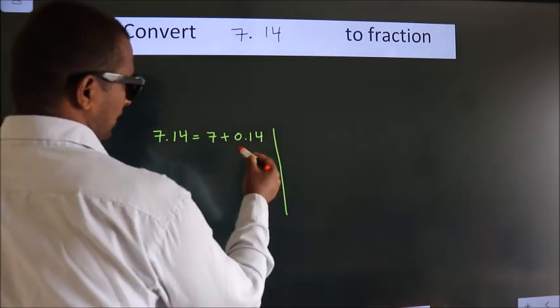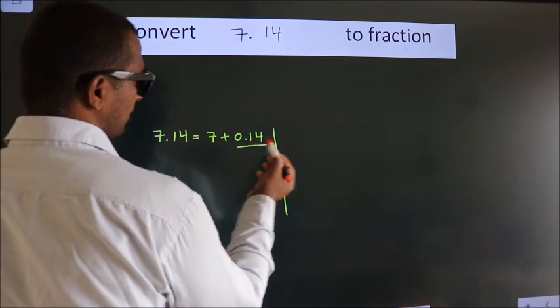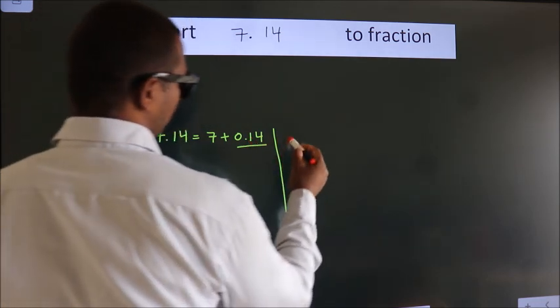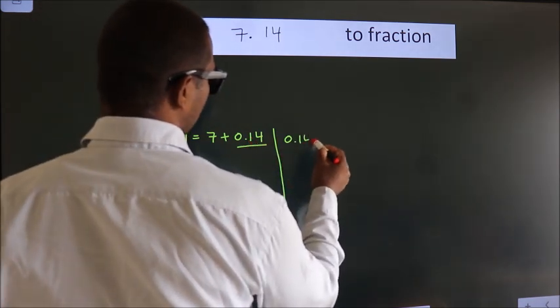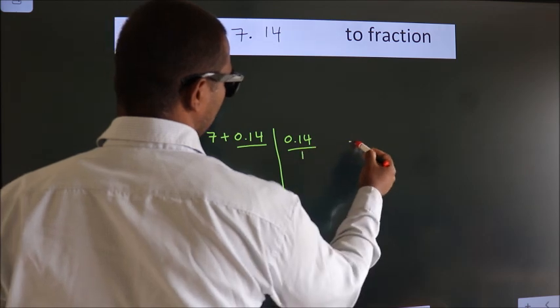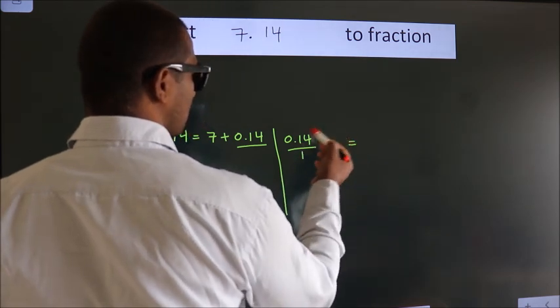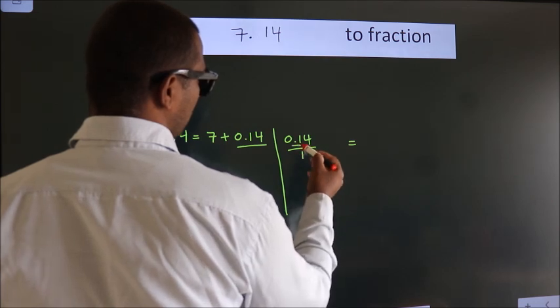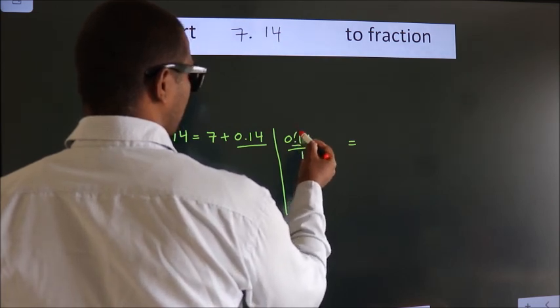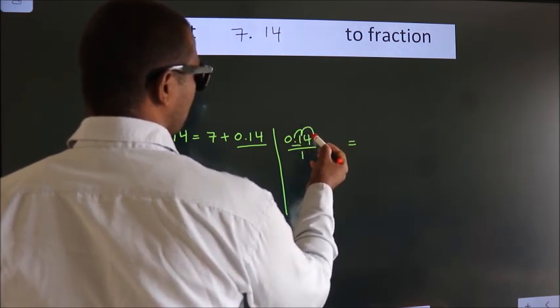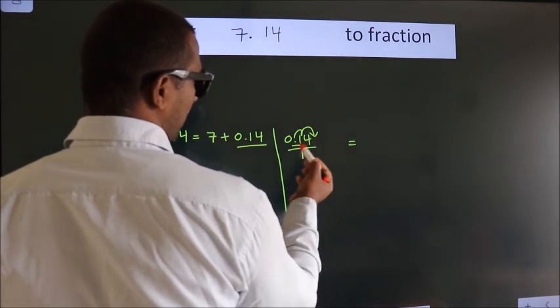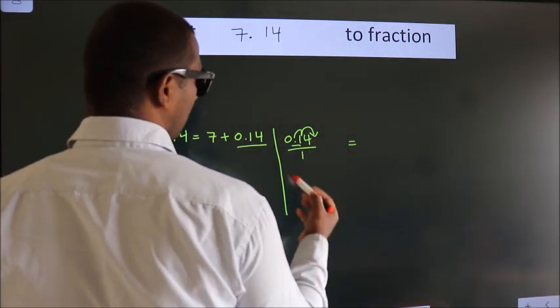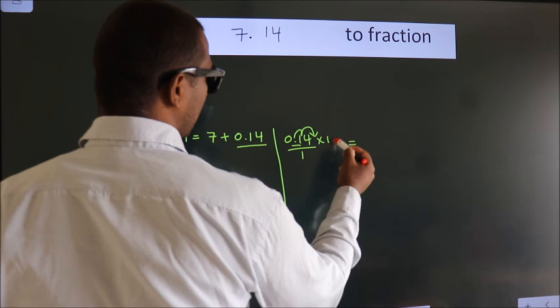Next, convert this to fraction. So 0.14. To convert this to fraction, we have to move the decimal after 2 numbers. To move this decimal after 2 numbers, multiply it with 100.